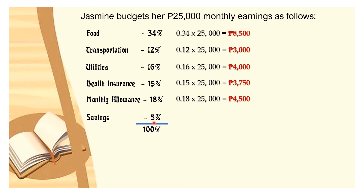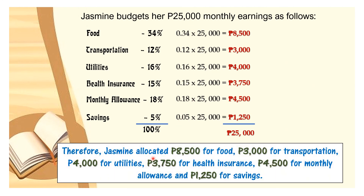For savings: 5% equals 0.05 in decimal; multiplied by 25,000 pesos equals 1,250 pesos. To verify that our answers are correct, we add all the values together, and that equals 25,000 pesos, which matches Jasmine's monthly earnings. Therefore, Jasmine allocated 8,500 pesos for food, 3,000 pesos for transportation, 4,000 pesos for utilities, 3,750 pesos for health insurance, 4,500 pesos for monthly allowance, and 1,250 pesos for savings.